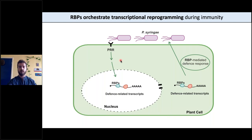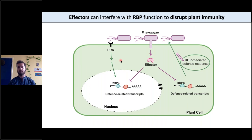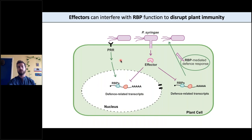We know that RNA binding proteins are very important to orchestrate this transcriptional reprogramming of plant immunity — what we call the RBP or RNA binding protein mediated defense response. We also know that some pathogens such as Pseudomonas syringae can deliver effectors into the plant cell, and this can interfere with host processes. Some examples are the targeting of RNA binding proteins to disrupt plant immunity. By targeting RBPs, these effectors can disrupt the RBP-mediated defense response.